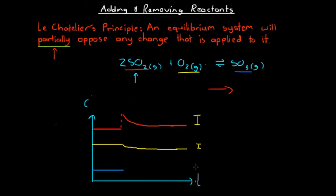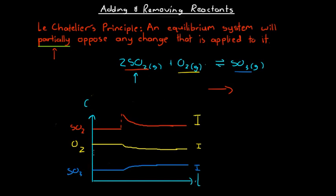So we see a sudden increase then a gradual drop in sulfur dioxide concentration, a drop half as large in oxygen concentration, and an increase half as large in sulfur trioxide concentration. This is a simplified version — in reality concentrations are likely much closer together and lines may cross. It can be helpful to spread them out on the vertical axis to increase clarity. That is how we can draw a concentration versus time graph using Le Chatelier's Principle when adding or removing reactants.